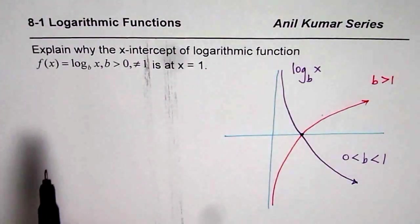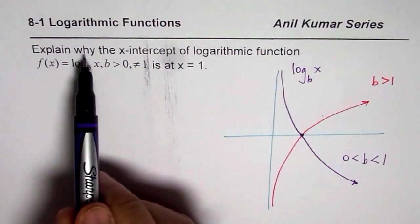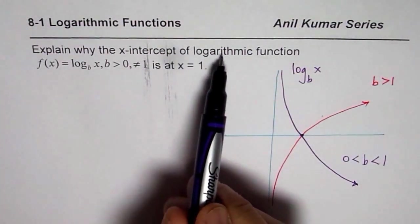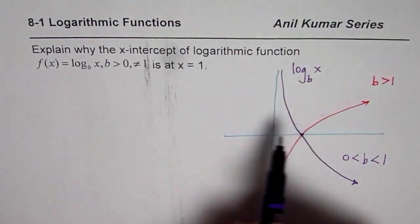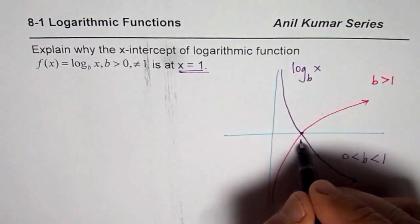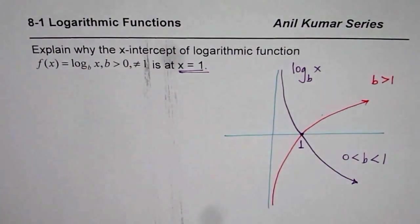Now, the question is: explain why the x-intercept of this logarithmic function is at x = 1. Why is this point 1? That is the question for you.